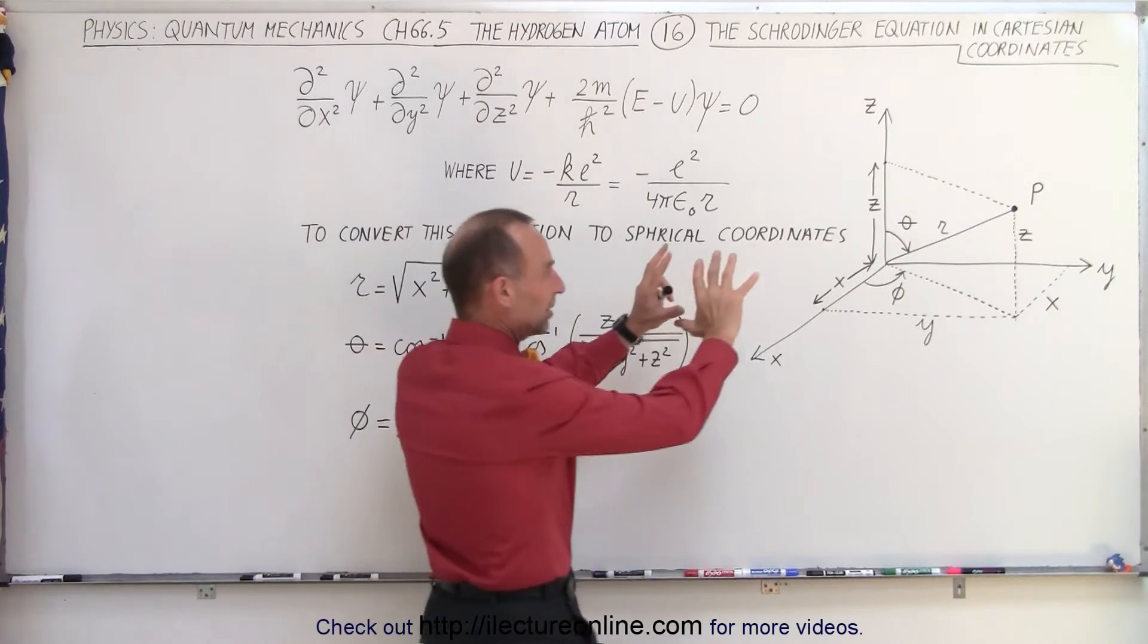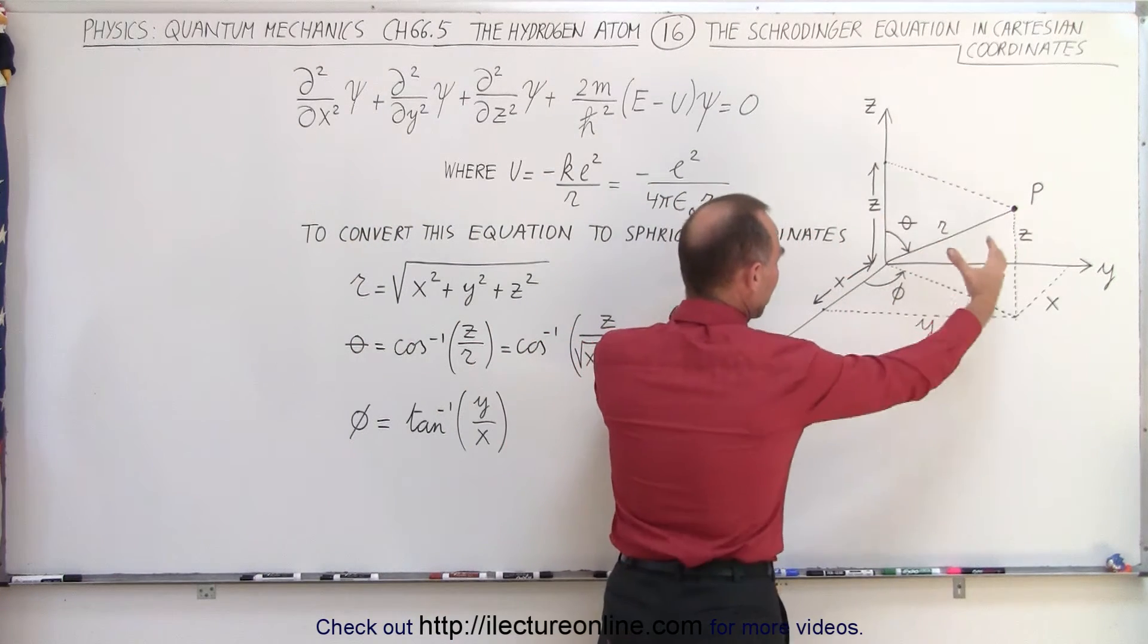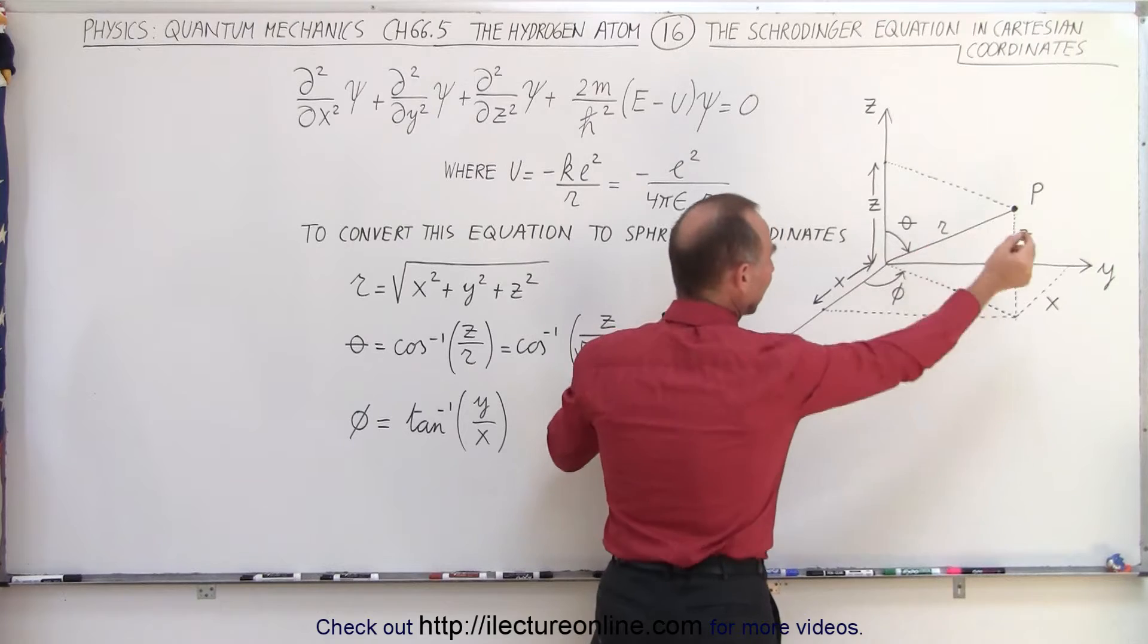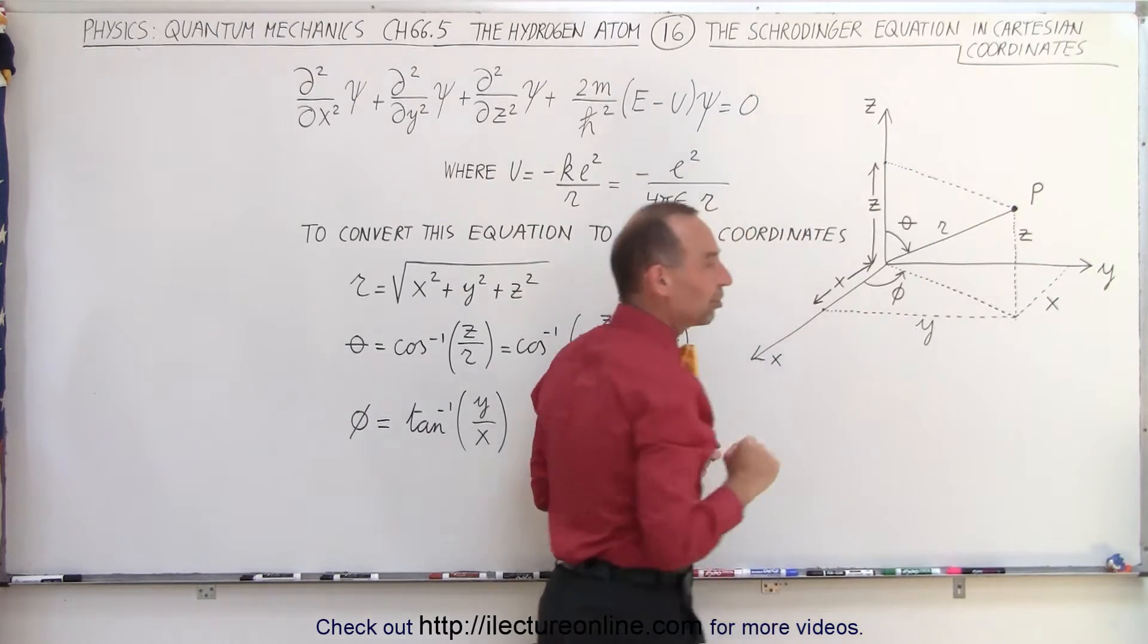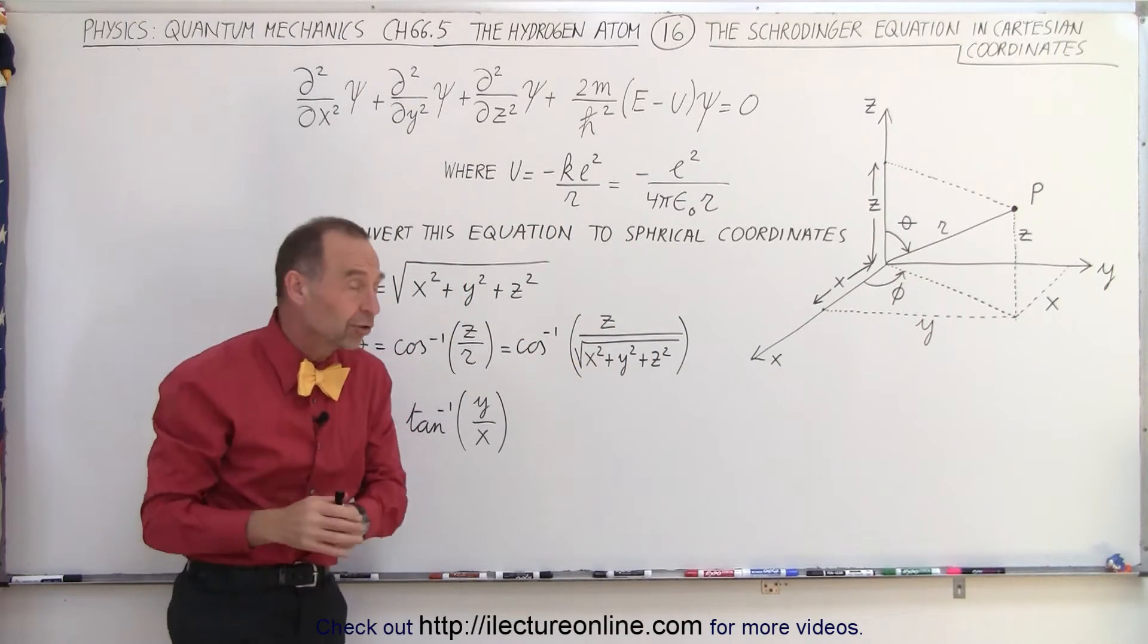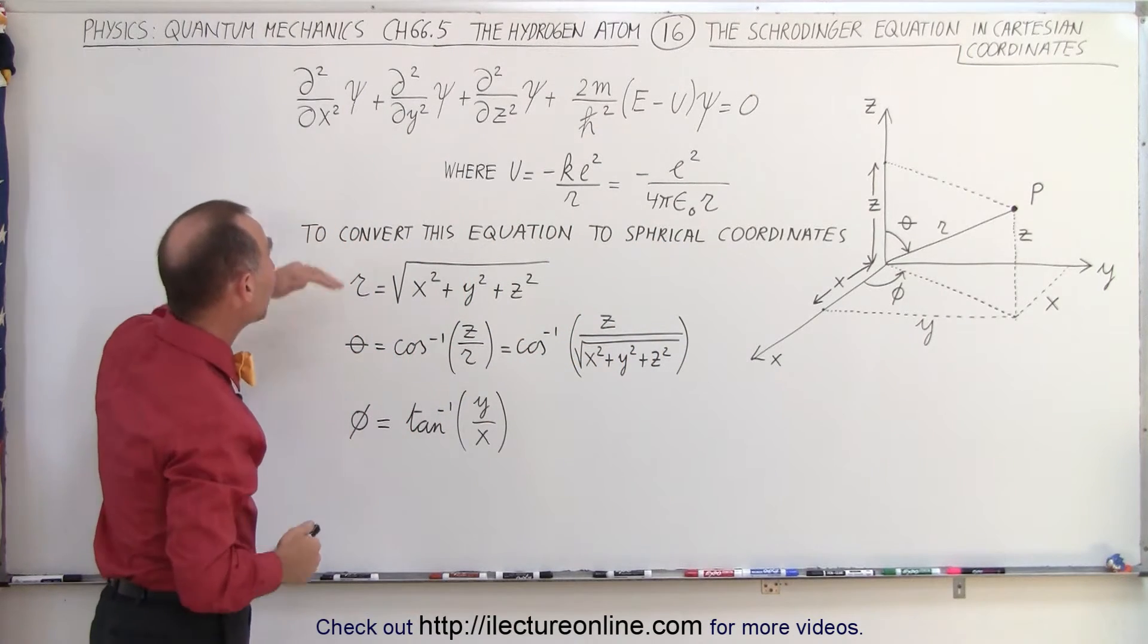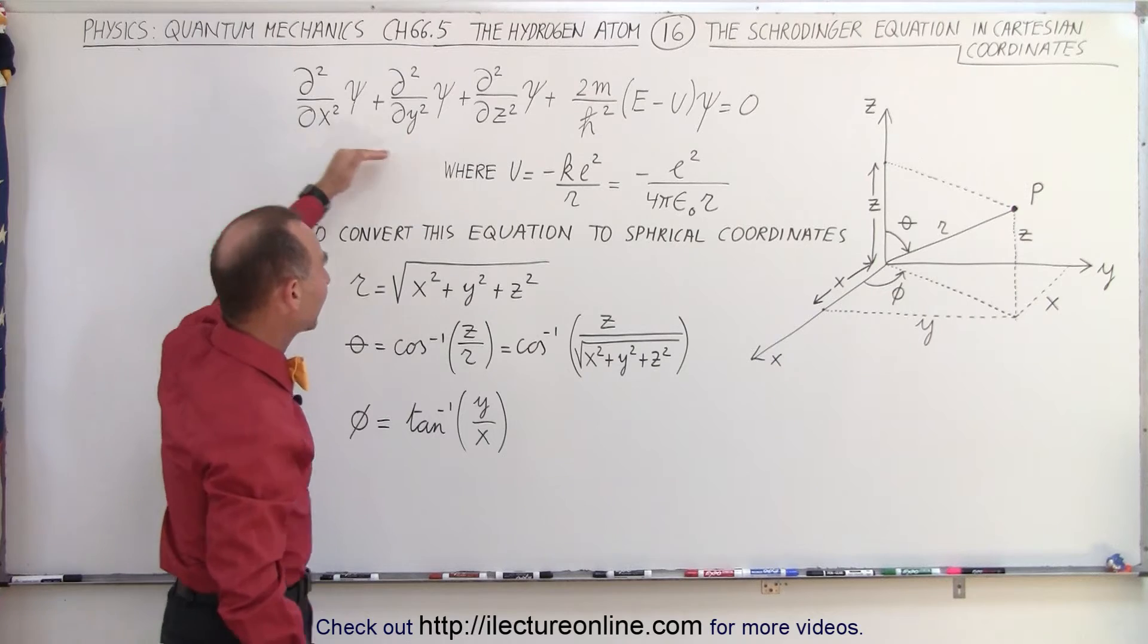If you imagine that the atom is right here somewhere with the nucleus at the center and the electron moving around the nucleus somehow, we have to describe its position. We can start from Cartesian coordinates, x, y, z, and then the Schrodinger equation would look like this.